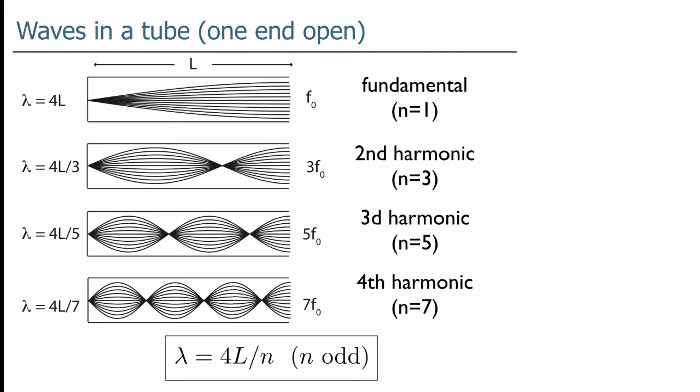And you keep going with the odd numbers. Four-fifths for n equals 5. Four-sevenths for n equals 7. And there is no n equals 2 or n equals 4 or n equals 6 in the case of an open-ended tube.